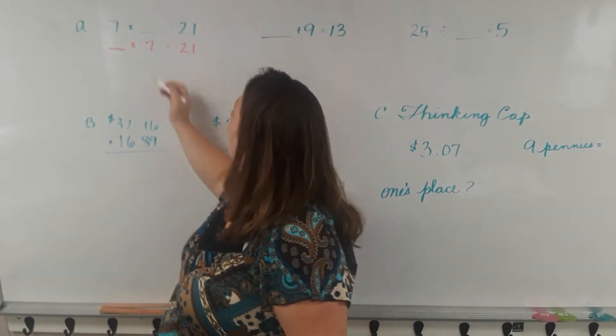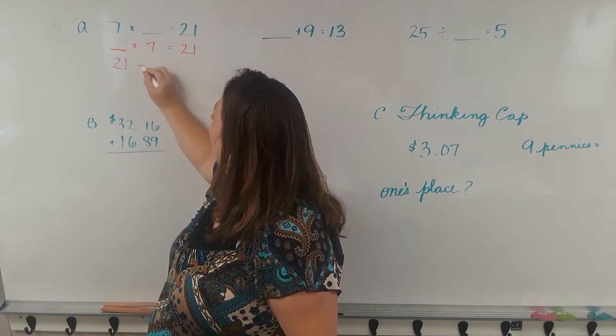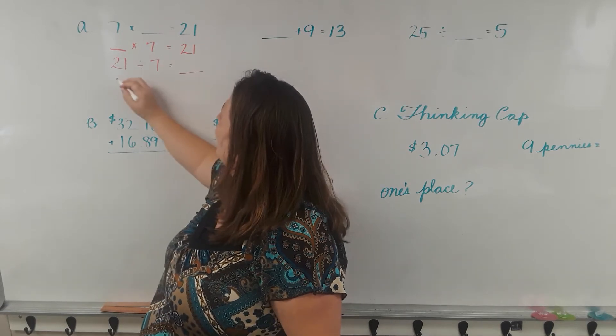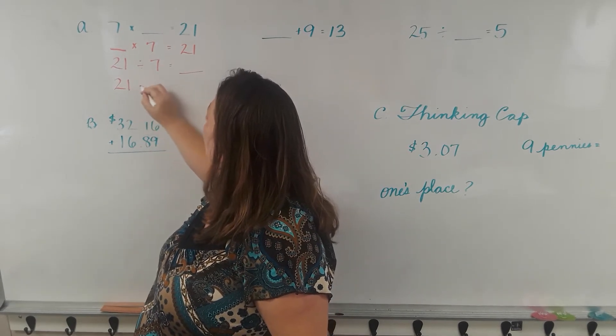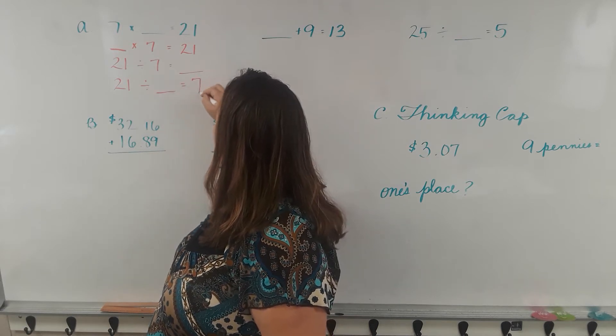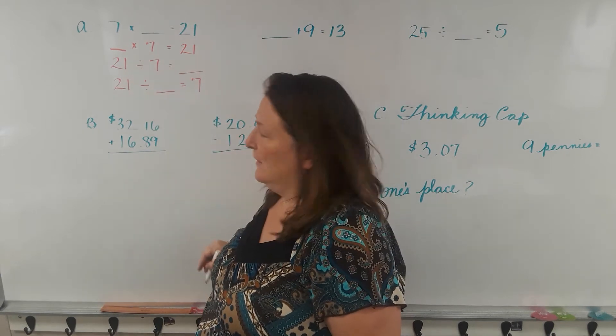And then we have two division problems. Start with a higher number: 21 divided by 7 equals a number, and then 21 divided by a number equals 7. 21 divided by 7...